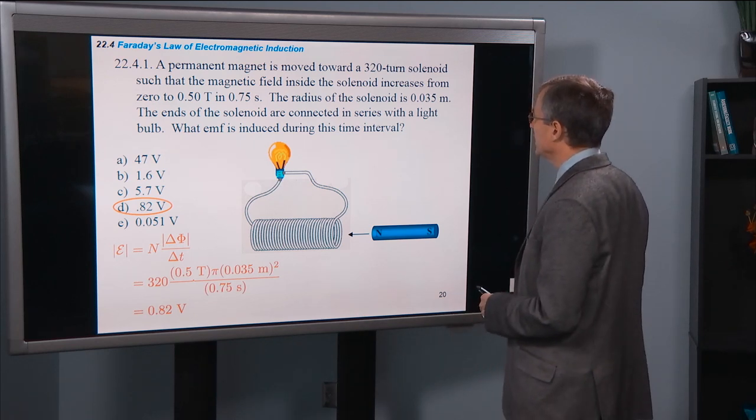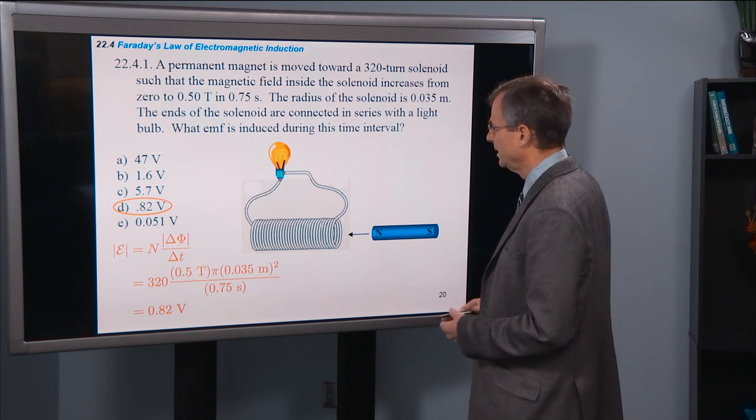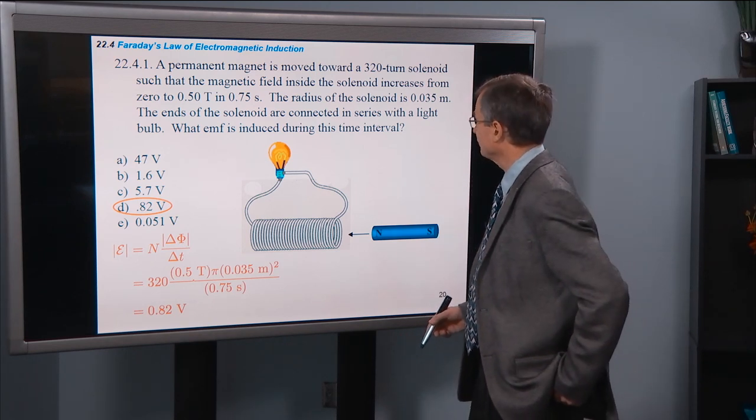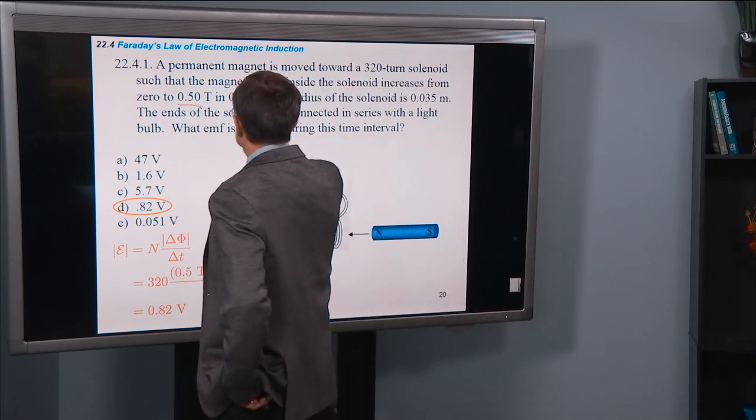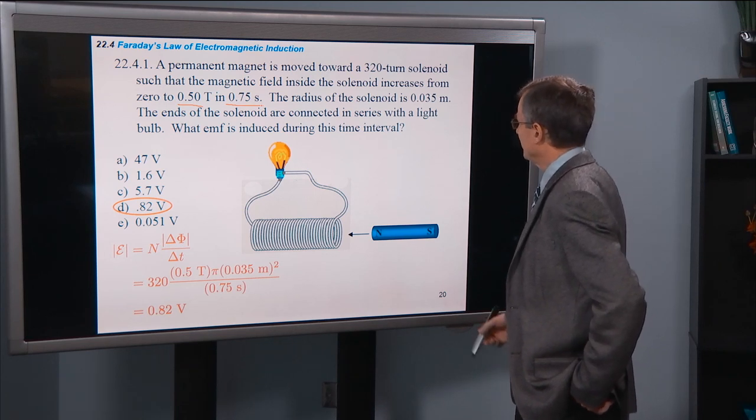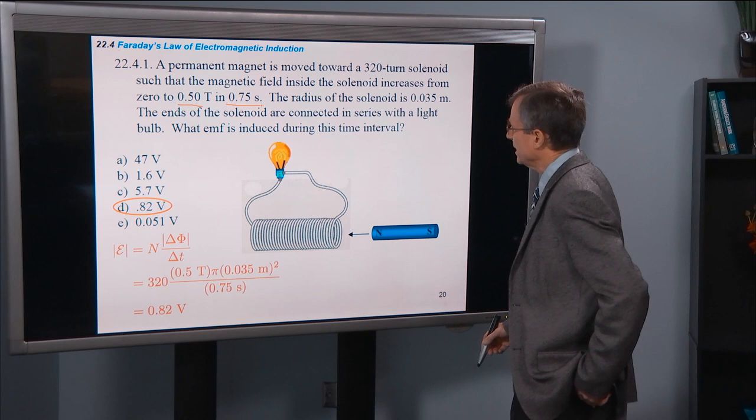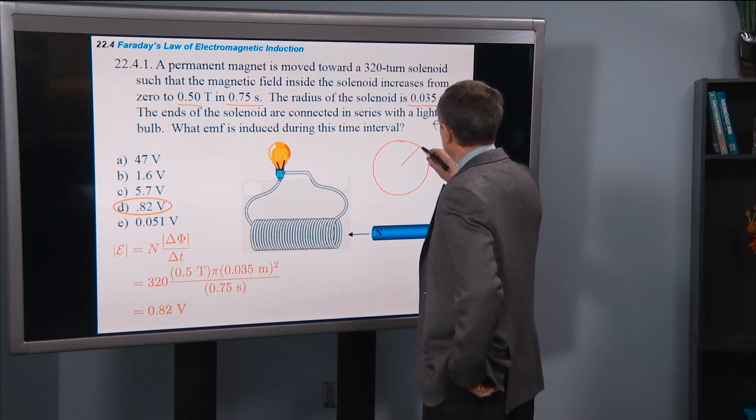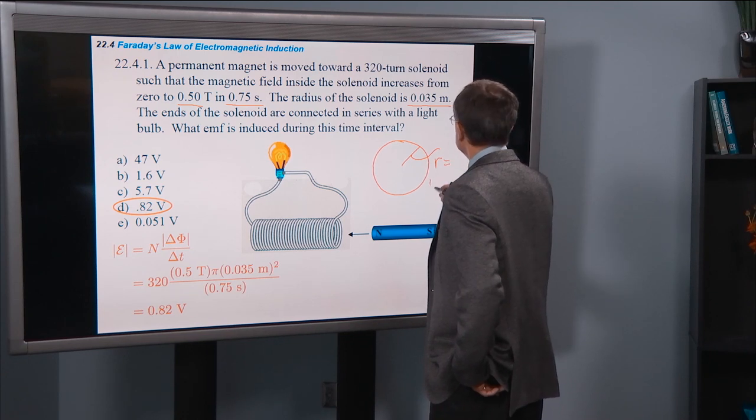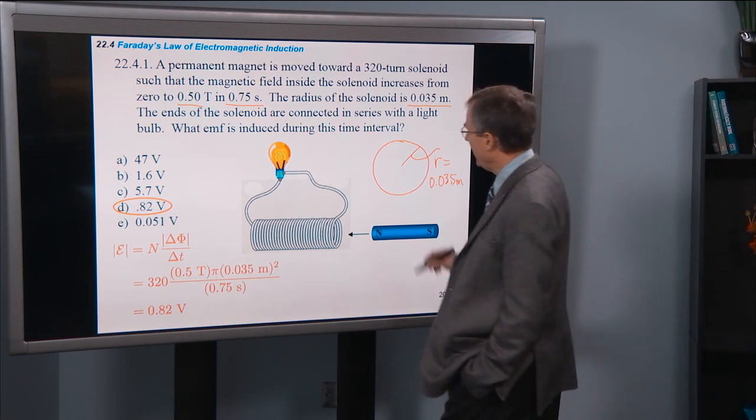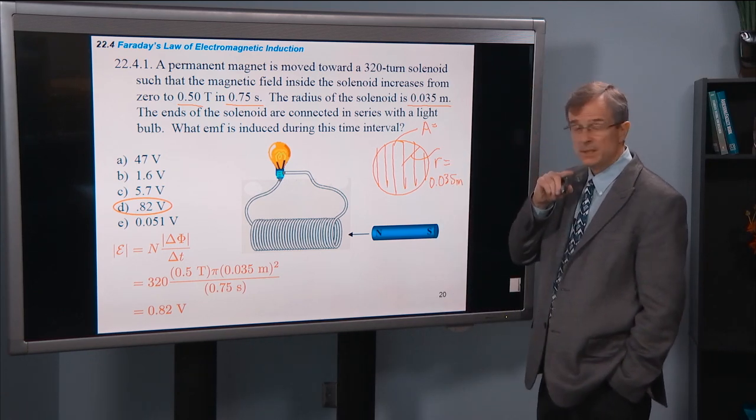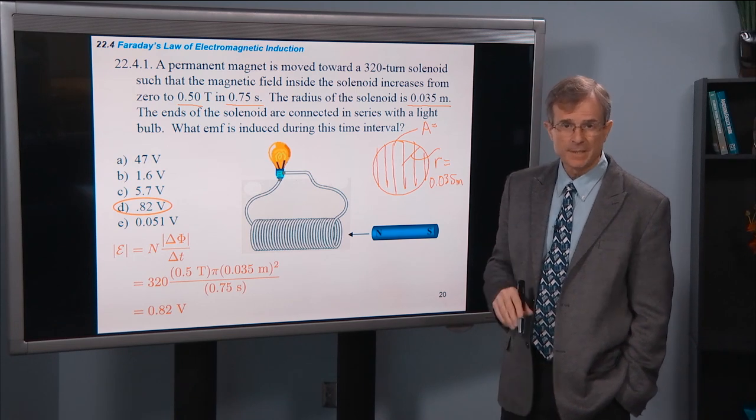Another example, a permanent magnet has moved toward a 320 turn solenoid. Solenoid is a cylindrically shaped windings that form the shape of a cylinder. And the magnetic field increases from 0.05 tesla to 0.75. This calculation is actually quite similar, except we have to actually work out the area. We're given the radius of 0.035 meters. And we need the area. And what's that area going to be? Well, it's the area of a circle, area inside of a circle, area of a disk. And that's pi r squared.